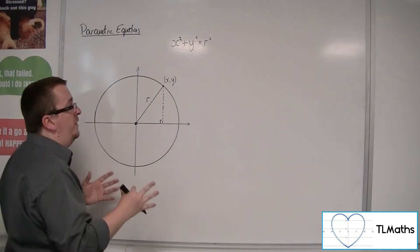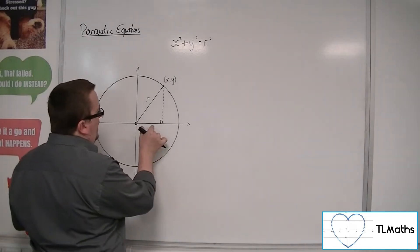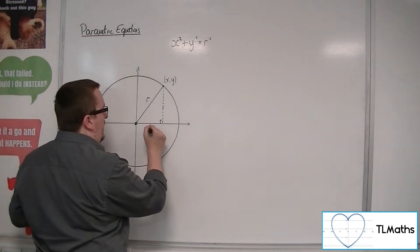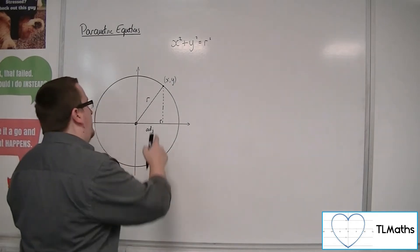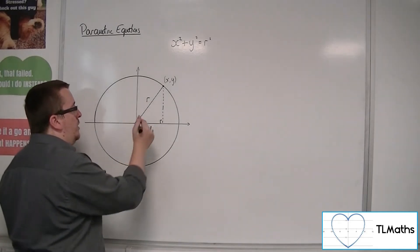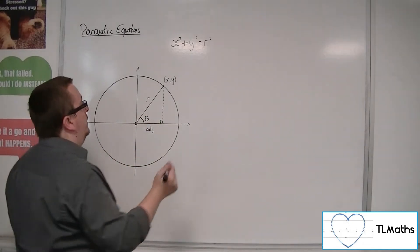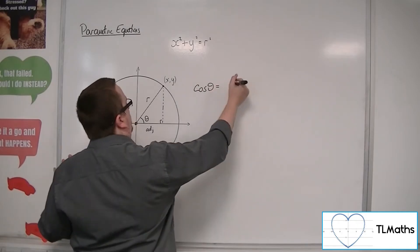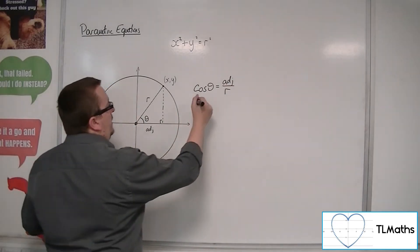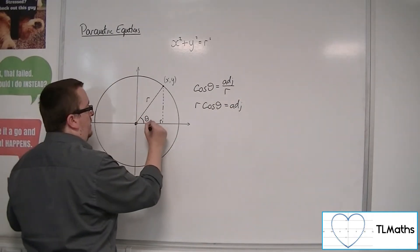Now, we're generalising it to a circle centred at the origin with radius r. If I was thinking about how I can represent the base of this triangle — well, the base is the adjacent, and the hypotenuse is r. We know that adjacent over hypotenuse gives cos theta, so the adjacent is just r cos theta.